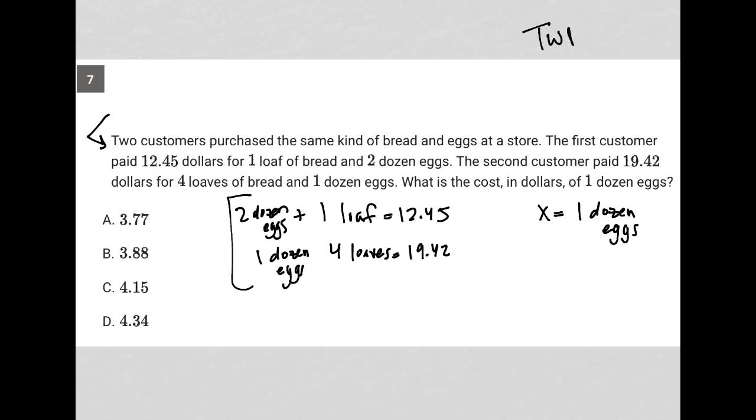So this is a translate word problem question. We were able to read it and then translate what I have here in the bracket. But when I look at it, it looks like it's set up like a system of equations. So I want to have X and Y here instead of dozen of eggs and loaves of bread. So I'm going to say X equals one dozen of eggs, and I'm going to say Y equals one loaf of bread.